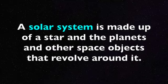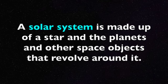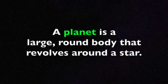A solar system is made up of a star and the planets and other space objects that revolve around it. In our solar system, our star is the Sun. A planet is a large round body that revolves around a star. All eight planets in our solar system revolve around our star, the Sun.